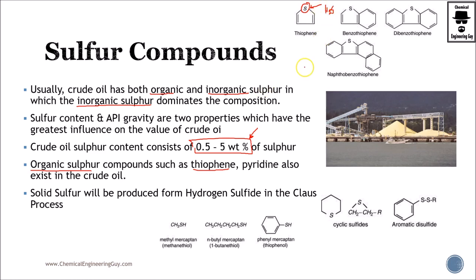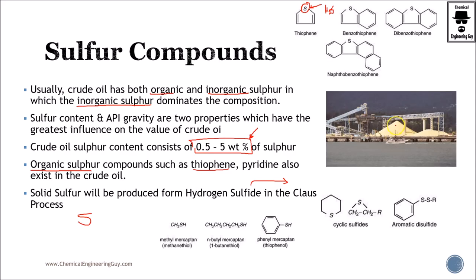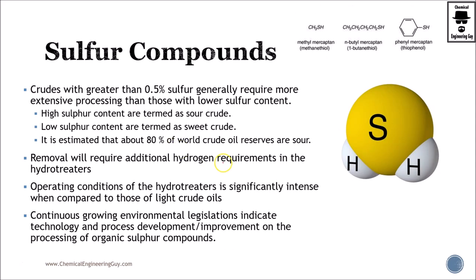It's kind of hard to remove it this way because you will need to hydrotreat it in order to ensure that you form hydrogen sulfide and then recover it. Hydrogen sulfide will then be sent to the Claus process in order to obtain solid sulfur, as seen here. Now, whenever we're talking about crude oils, we can determine if this is a sour or a sweet crude oil.